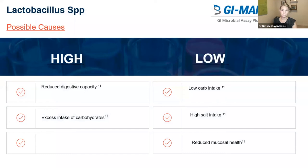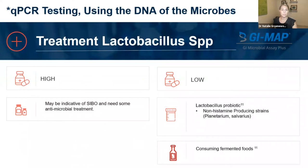Recent studies have found that the immunoregulatory effects of Lactobacillus are really strain-specific — some are pro-inflammatory, some are anti-inflammatory, and some are both. So it depends on what strain the patient has or which strain you're considering supplementing with. It helps the body break down and metabolize lactose, and several studies reveal that consuming Lactobacillus acidophilus and other probiotics may improve symptoms of IBS. Clinically relevant questions if Lactobacillus is low: Are there any large intestine pathogens present? Does the patient have lactose intolerance? Any symptoms of IBS? Lactobacillus can go high from reduced digestive capacity or excess carb intake; it goes low with low carb intake or reduced mucosal health. If high, this may be indicative of SIBO and may need antimicrobial treatment. If low, supplement with Lactobacillus probiotic — the non-histamine producing strains are plantarum and salivarius. Consuming fermented foods is also helpful.